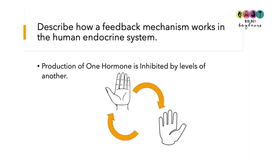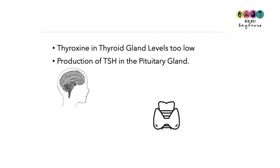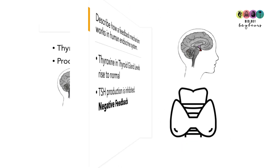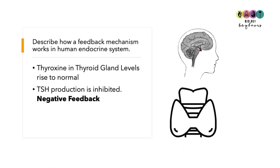Describe how a feedback mechanism works in the human endocrine system — how the production of one hormone is inhibited by levels of another. Using thyroxine and TSH as examples: when thyroxine levels are low, thyroid stimulating hormone is produced by the pituitary gland, travels to the thyroid gland, and causes the production of thyroxine. Thyroxine levels increase and when they return to normal, they inhibit the production of TSH by the pituitary gland.